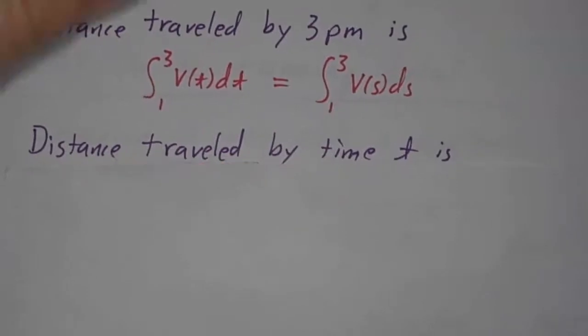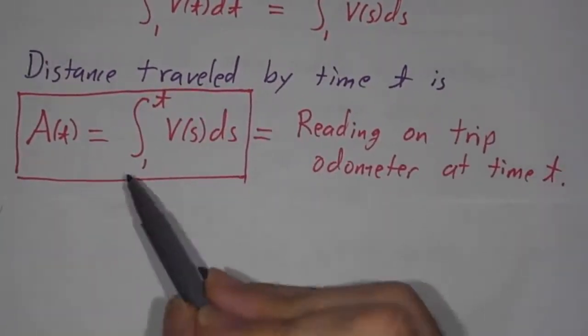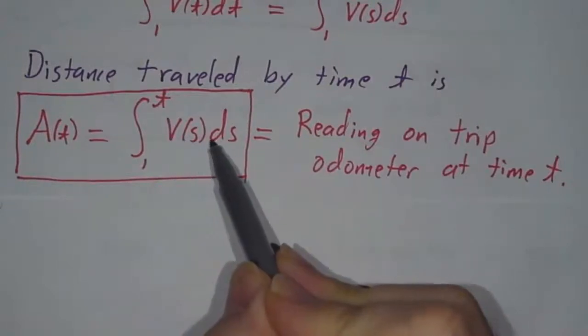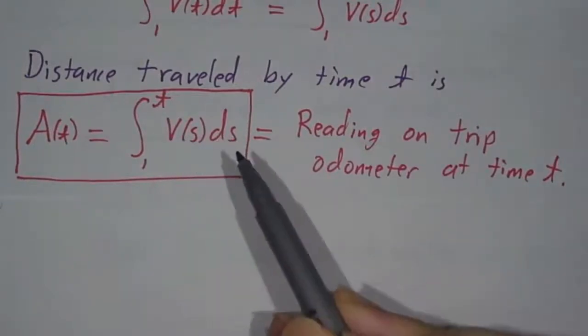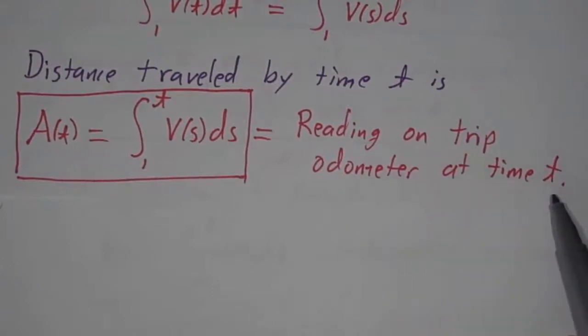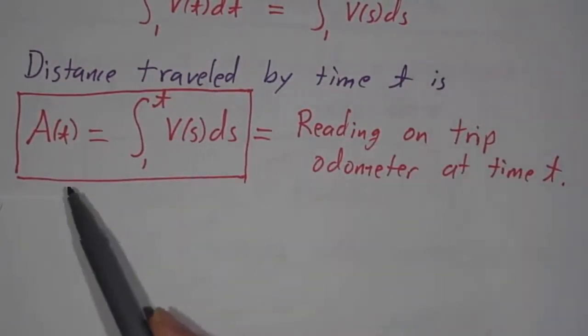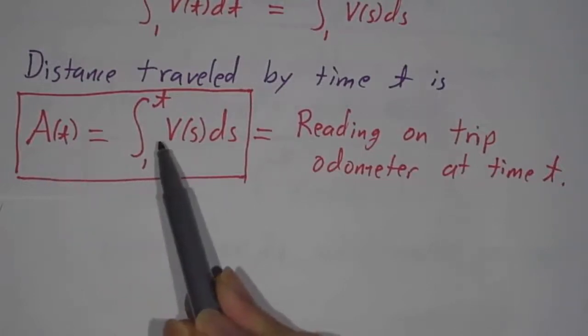Now, how far have you traveled by time t? Well, I claim that is the integral from 1 to t of v(s)ds. You can think of that as the reading of a trip odometer at time t, if you reset your trip odometer to start at 1 o'clock. Your trip odometer keeps a running total of how far you've gone, and A(t) is the reading of your odometer.